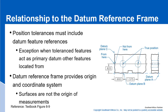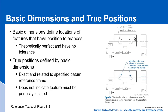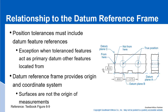Datum reference frames provide an origin and coordinate system. Here's our datum reference frame A, B, and C — datum plane A, datum plane B, and datum plane C. The part is located by the high points of those datum surfaces, and the true position is defined based on that. You're picking up the high spots of those datums to be able to check the position of these holes.